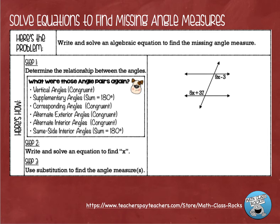This is a continuation of what we learned previously, where we had parallel lines cut by a transversal and we looked at the different types of angle pairs that were formed. To refresh your memory, what were those angle pairs? They were vertical angles, supplementary angles, corresponding angles, alternate exterior angles, and alternate interior angles.